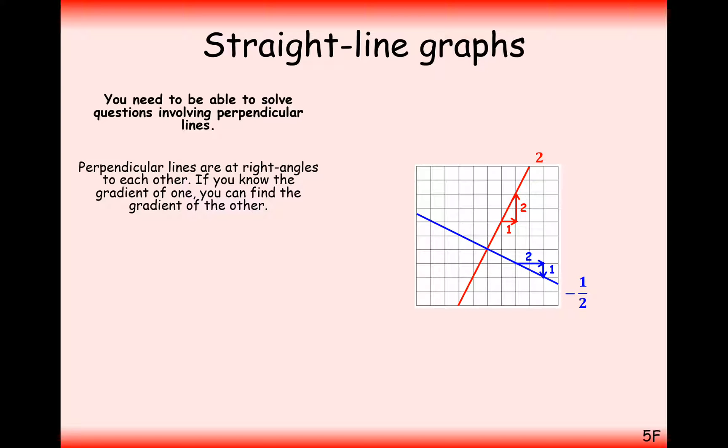And that effectively means that if we were to go one across, we'd go a half down, and as we're going down, we would say that the gradient here is minus a half.